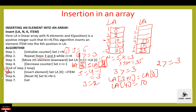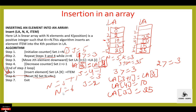Insert the element at index LA of k. Now the value of k is 3, so LA of 3 is equal to item. Item is 35, so element 35 is inserted at index 3. Then reset N — increase the value of N by 1. N was 5, so 5 plus 1 is 6. Now the total number of elements in the array is 6. This is the complete algorithm to insert an element into a linear array at a required position.